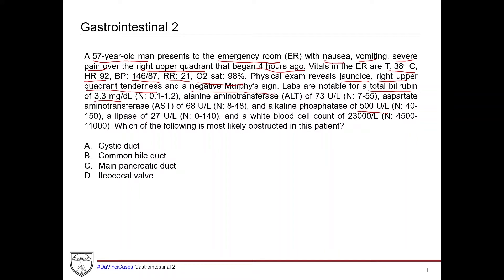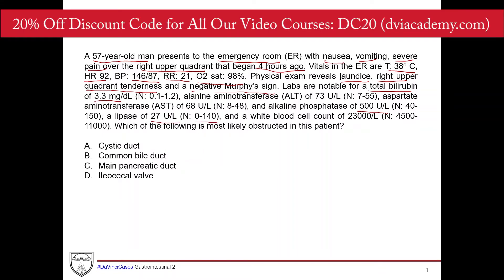Lipase is 27 units/L — normal is 0 to 140 — so within normal range. That makes pancreatitis less likely, and also makes gallstone pancreatitis from a stone obstructing the pancreatic duct less likely. White blood cell count is 23,000 per liter — normal is 4,500 to 11,000 — so this is an elevated white count.